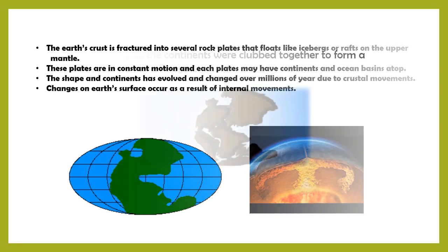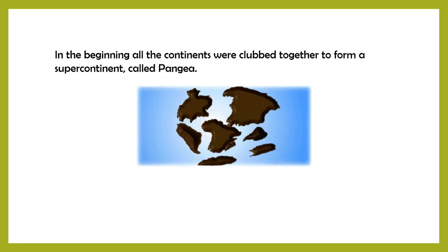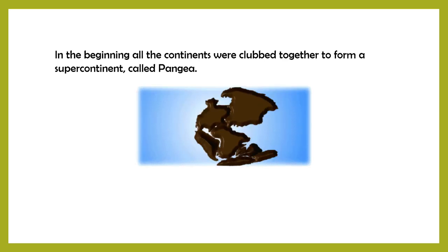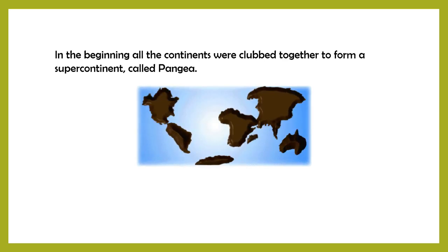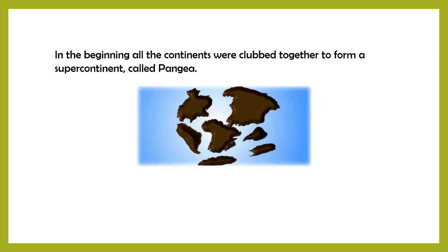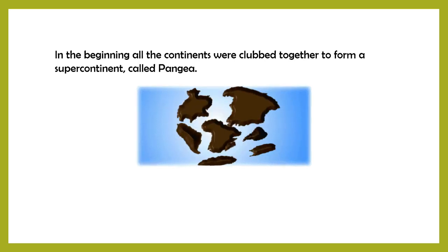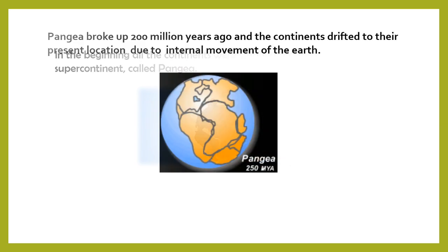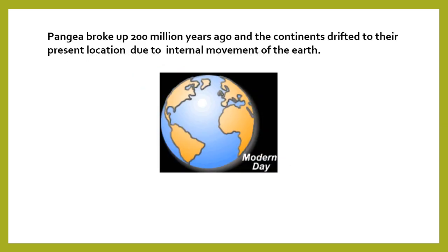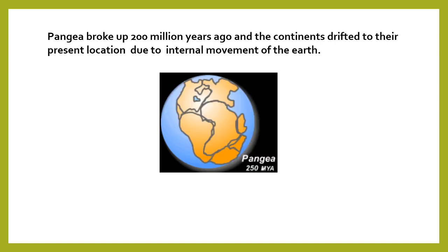In the beginning, all the continents were joined together to form a supercontinent called Pangaea. That means all the continents we have today — North America, South America, Europe, Australia, and Asia — were joined in one supercontinent called Pangaea. This Pangaea broke up 200 million years ago and the continents drifted to their present locations due to internal movement of the earth.